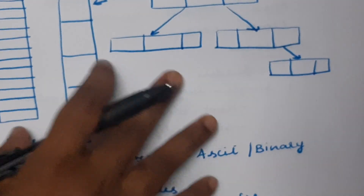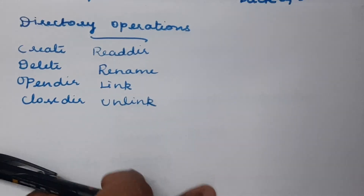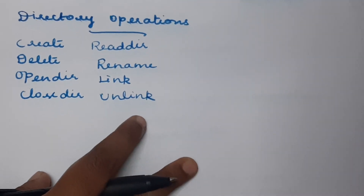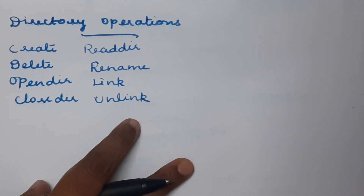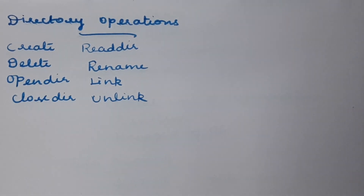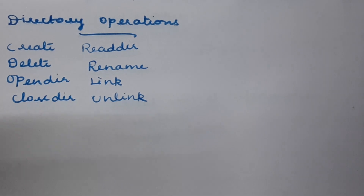Finally, we discuss directory operations. Similar to files, directories also have operations that can be performed using system calls: create, delete, open directory, close directory, read directory, rename, link, and unlink. These are the operations we can perform on directories.